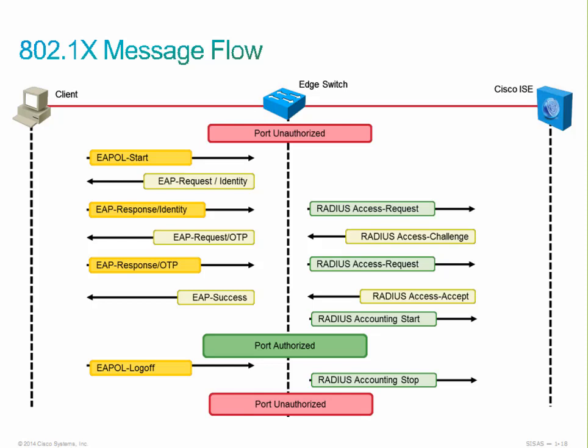If the supplicant doesn't receive the initial EAP Request Identity frame from the authenticator, it can initiate by sending an EAPOL Start frame to the authenticator. So the process could be initiated by the client or by the edge switch, depending on the timing.